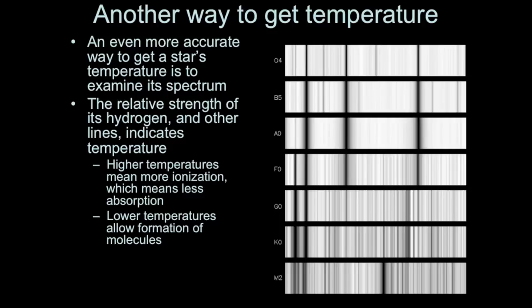It turns out that using this system, you can determine the temperature of a star even more accurately than you were able to before by looking at the peak wavelength of the star's blackbody curve.